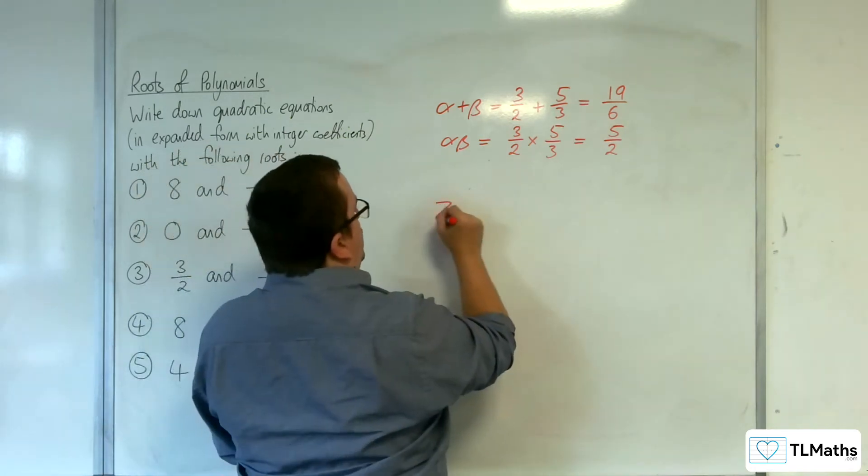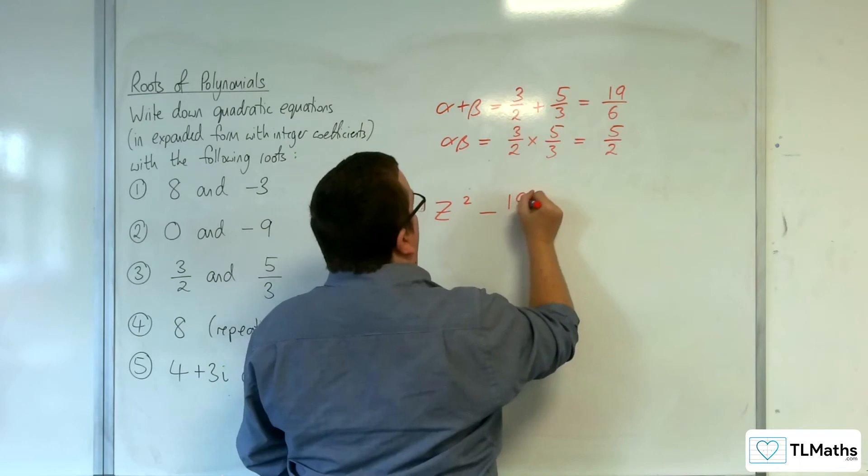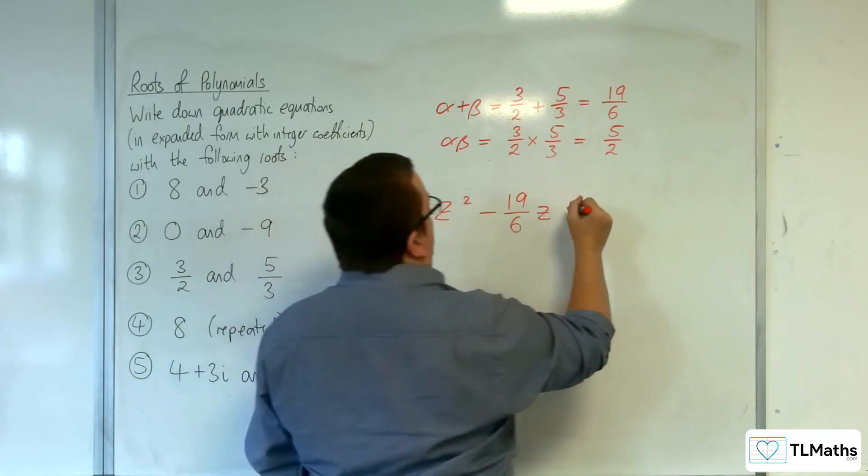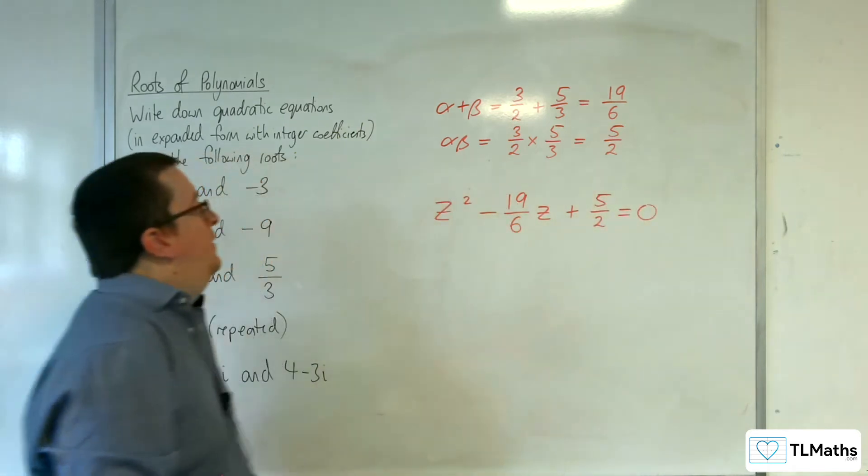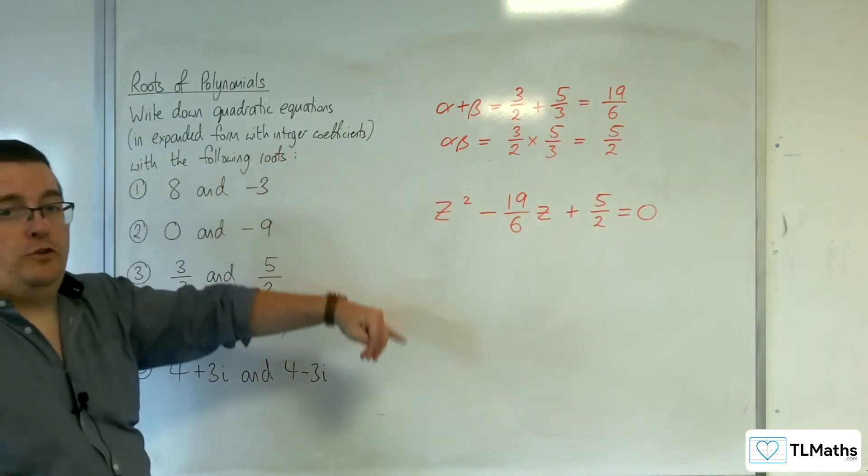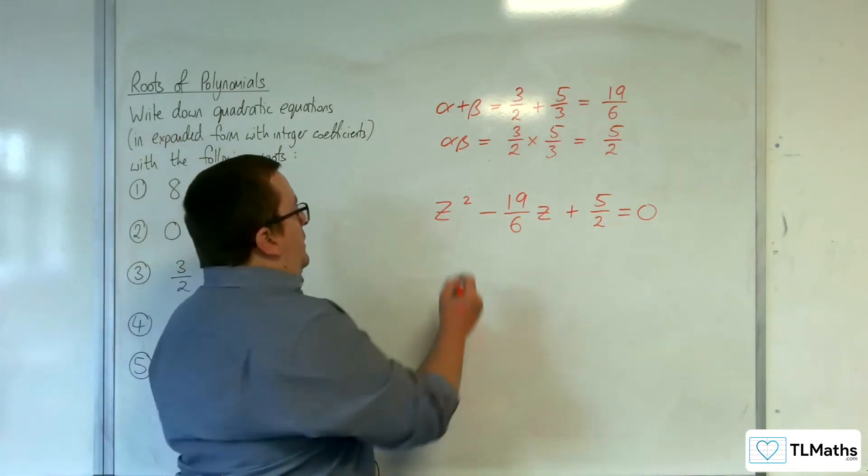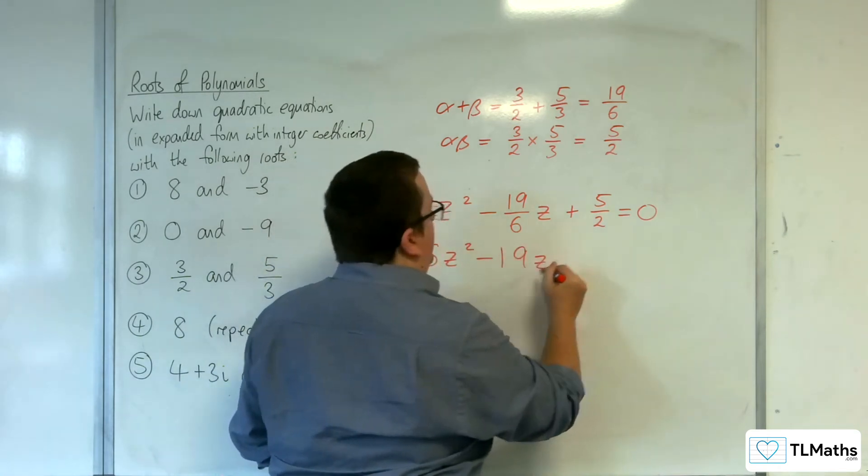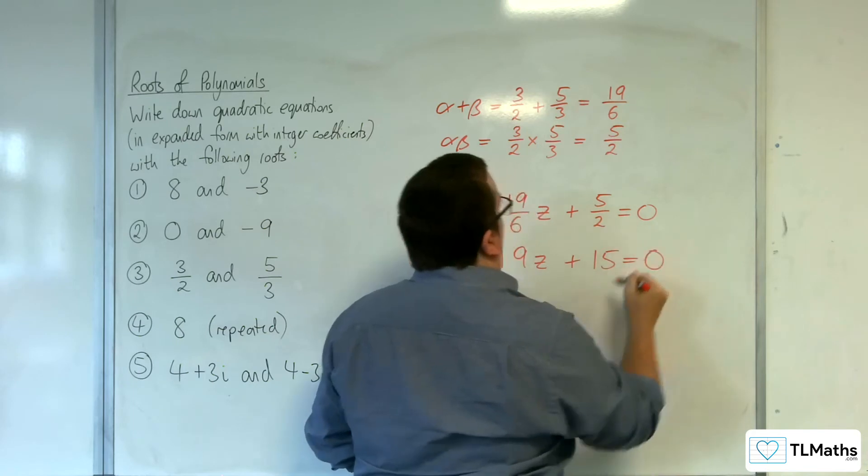So our quadratic equation is z squared, take away alpha plus beta times z, plus alpha beta equals 0. Now this quadratic doesn't have integer coefficients, so I need to multiply through by 6 in order to get there. So I'll have 6z squared, take away 19z, plus 15 equals 0.